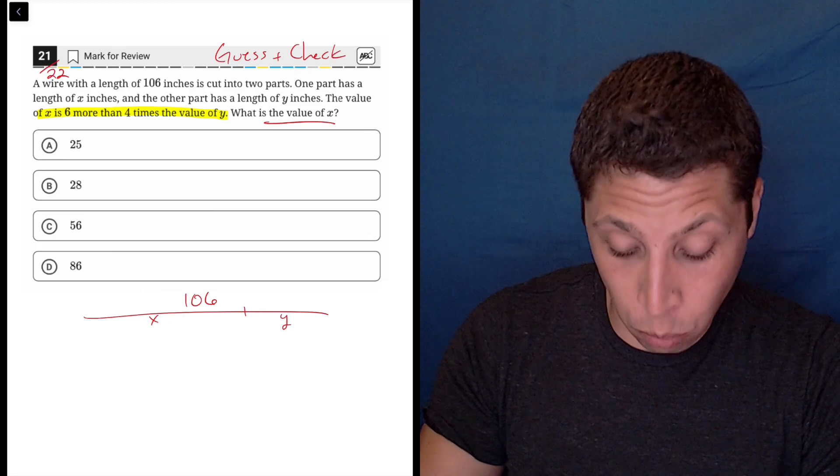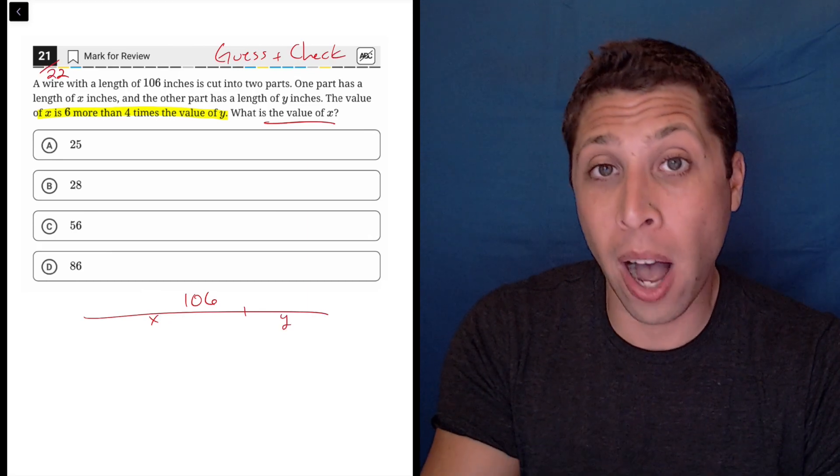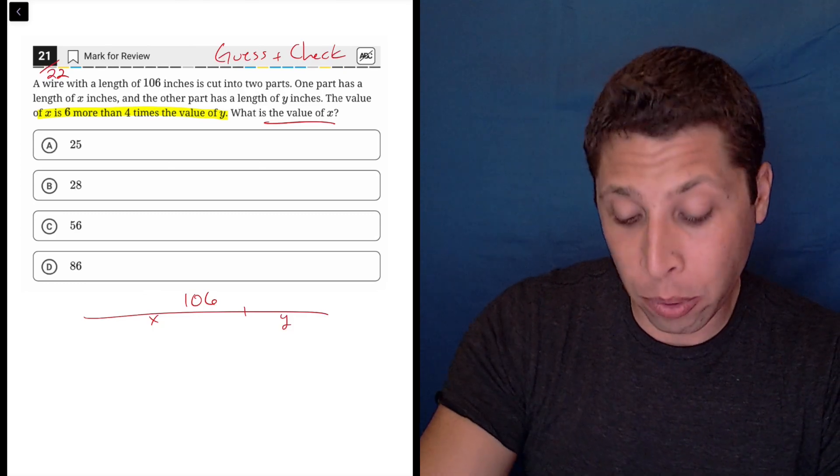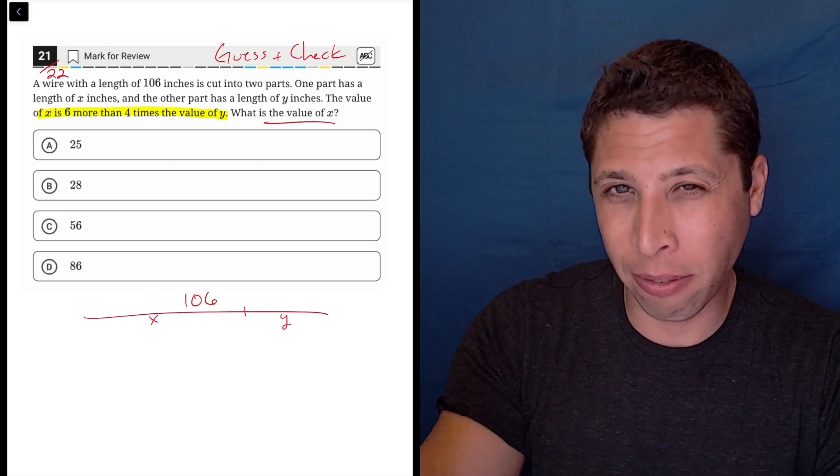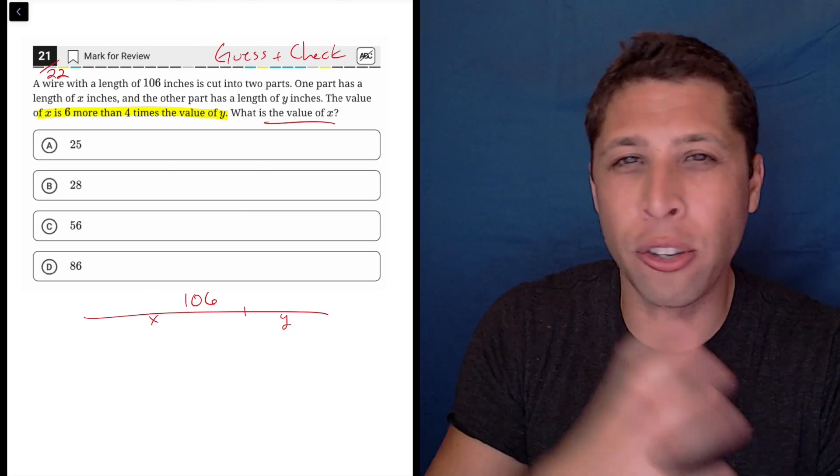I'm about to do some stuff to Y, four times, six more than four times Y. I'm going to do stuff to my Y to get an X. So if I wanted to guess and check with these answer choices, I kind of have to work it backwards. It's kind of confusing for my brain to do that.